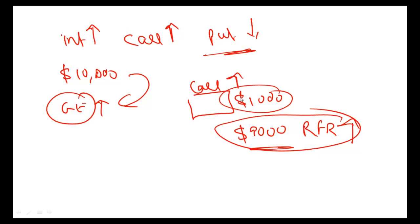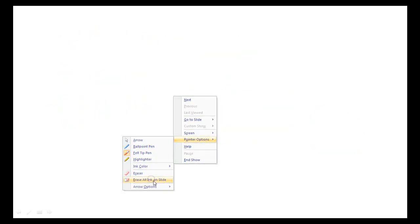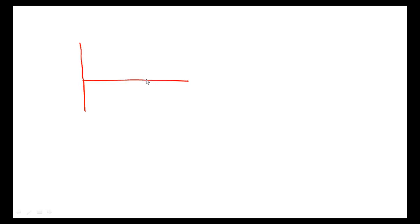The next set of questions was on maximum profit and maximum loss. The best way to do these is to draw the diagrams. If you have a long put or a short put, the fastest way to find the maximum loss is to first draw the long put diagram and then flip it for the short. This diagram I've drawn is the long put, and this is the short put. The profit diagram for the short put looks like this.